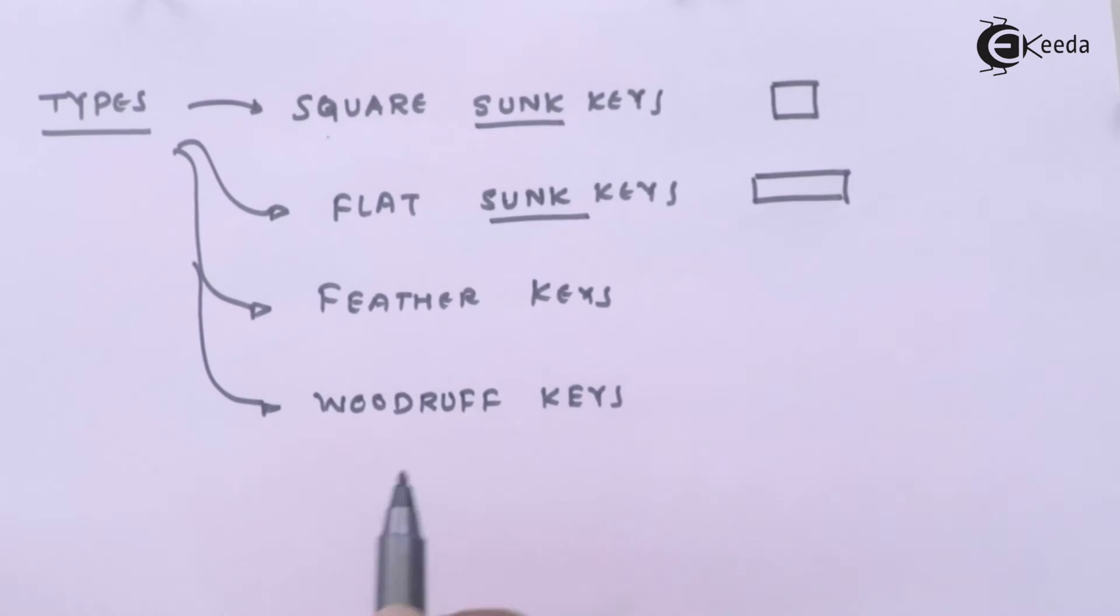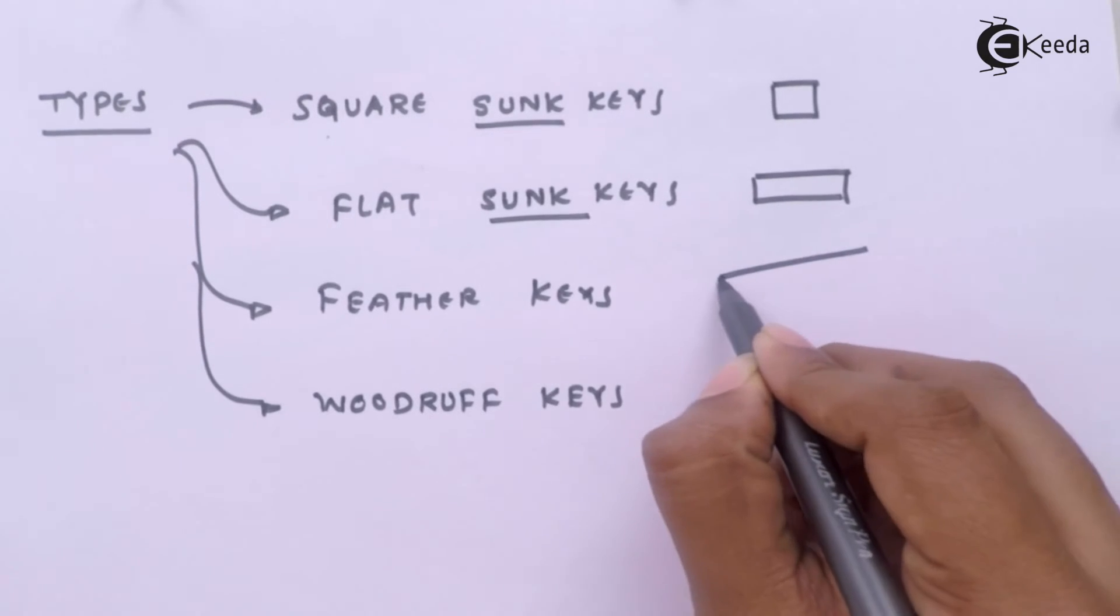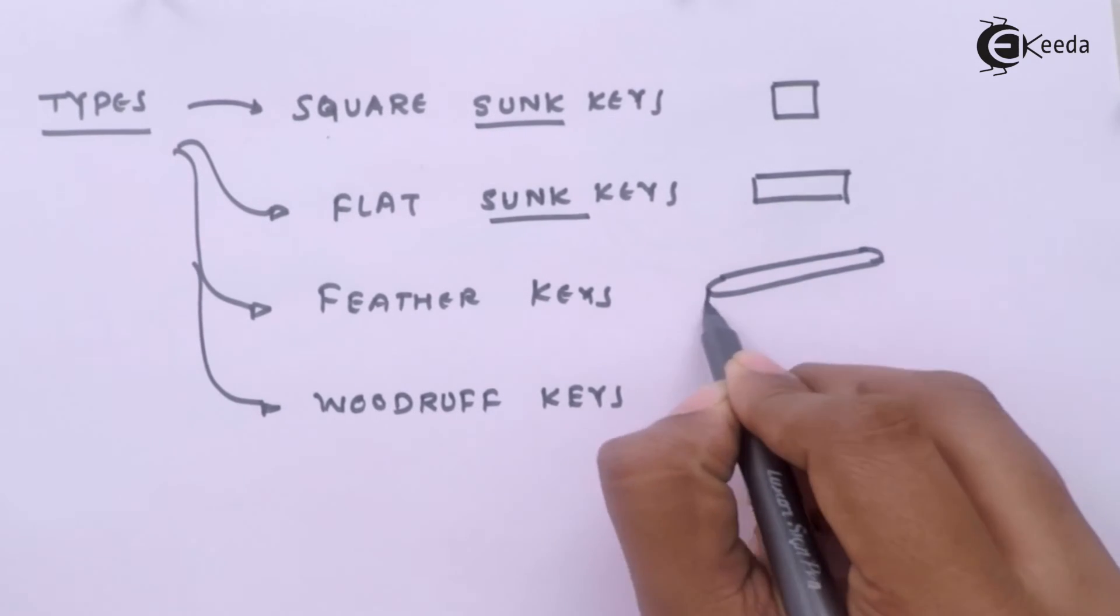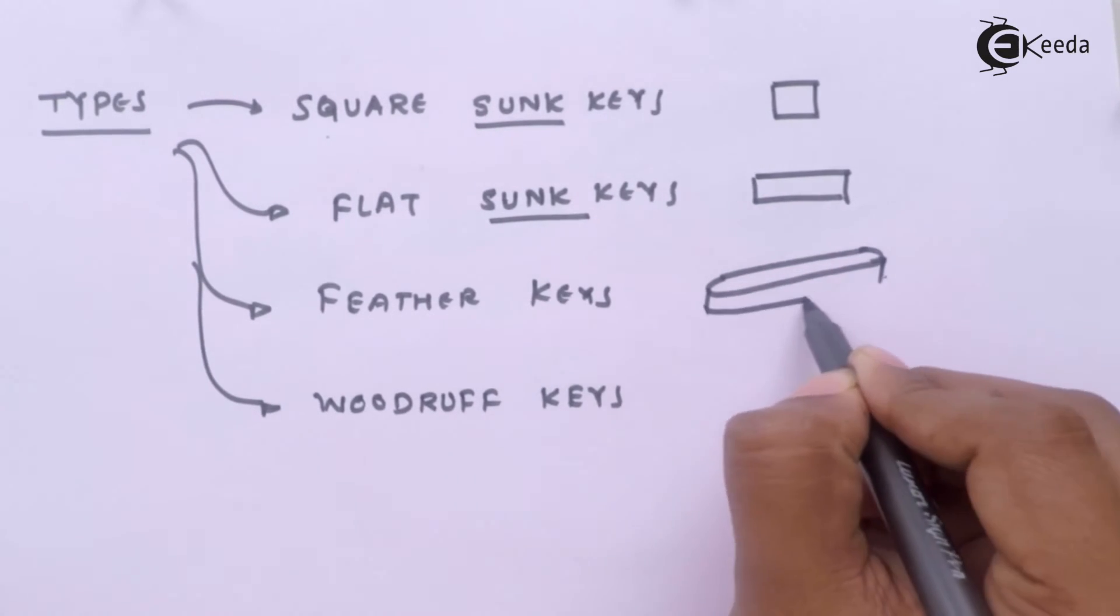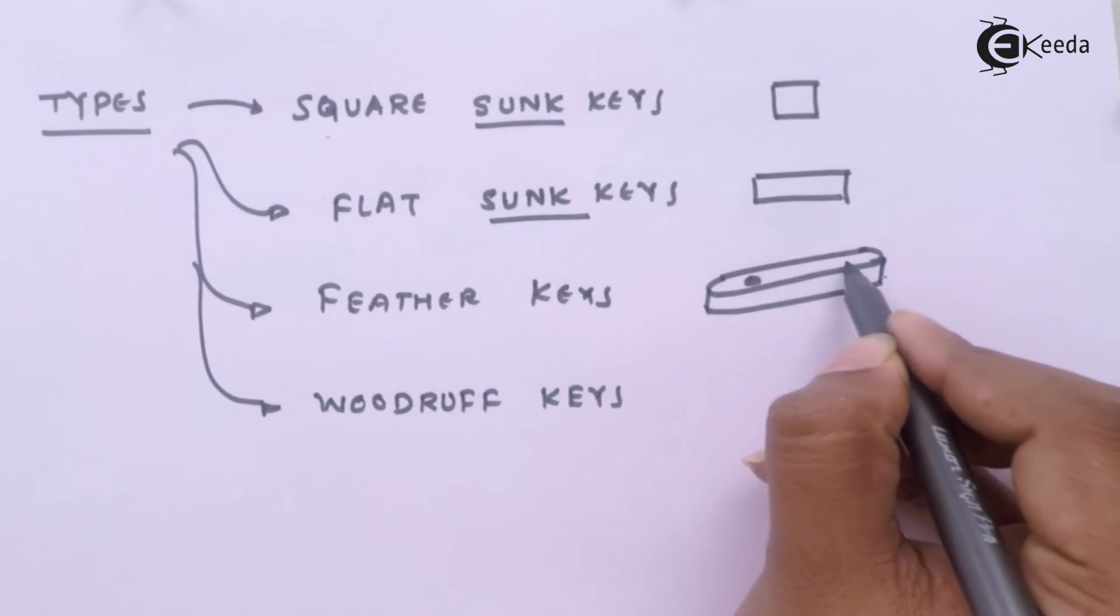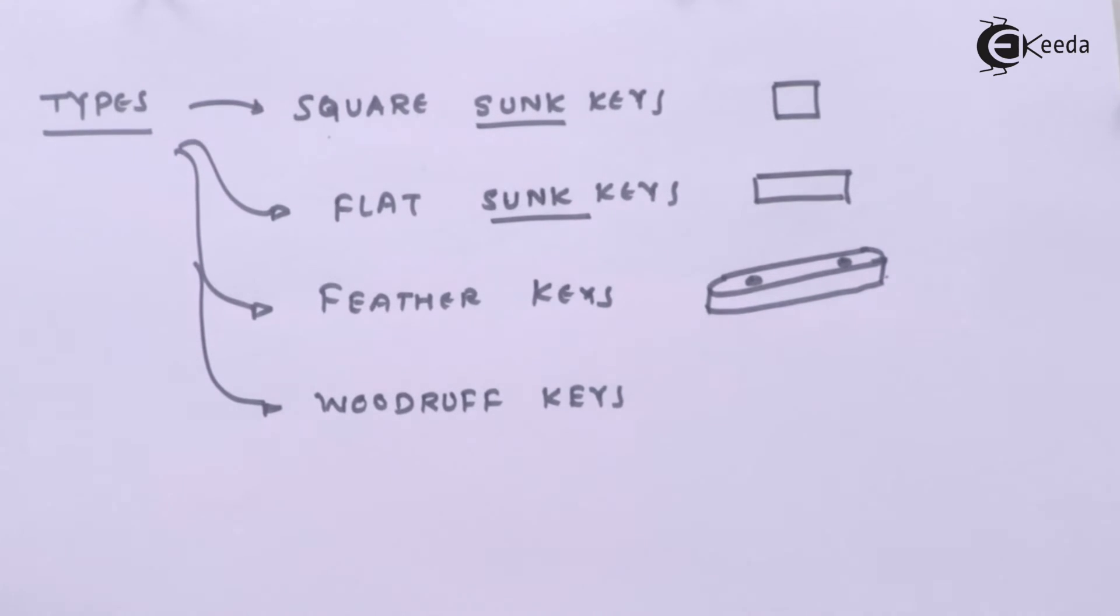Feather key will be having this kind of nature and it will be having two holes. So we will require another fastener like screw or bolt that will fasten this particular key inside the hub or inside the shaft.